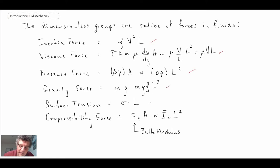Surface tension would be the surface tension coefficient multiplied by some length L. And finally, the compressibility force is the bulk modulus multiplied by some area. What we're now going to do is form ratios of some of these different forces, and we'll find that when you do that, some very well-known non-dimensional numbers drop out.